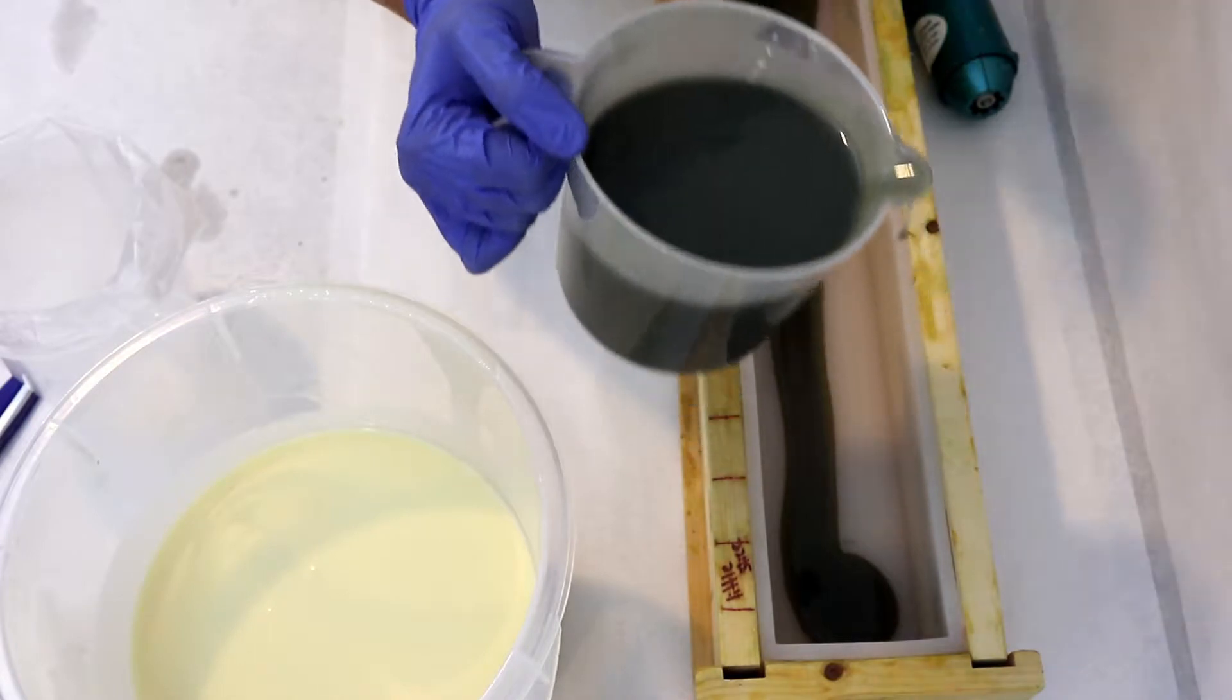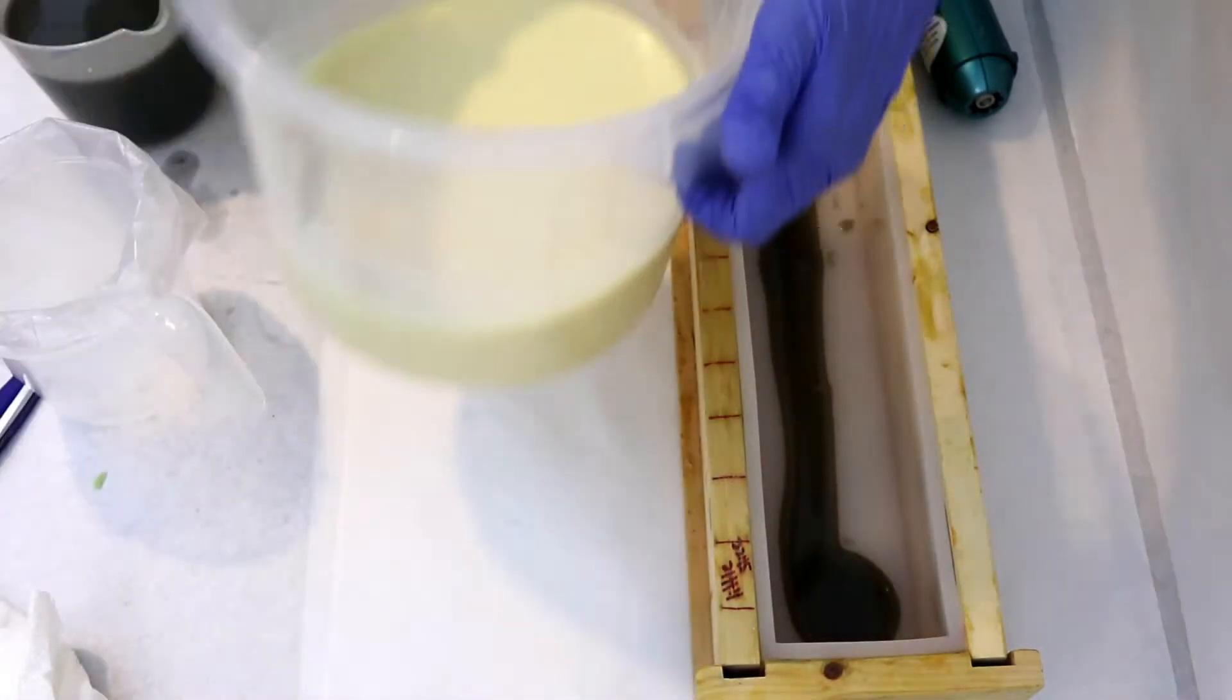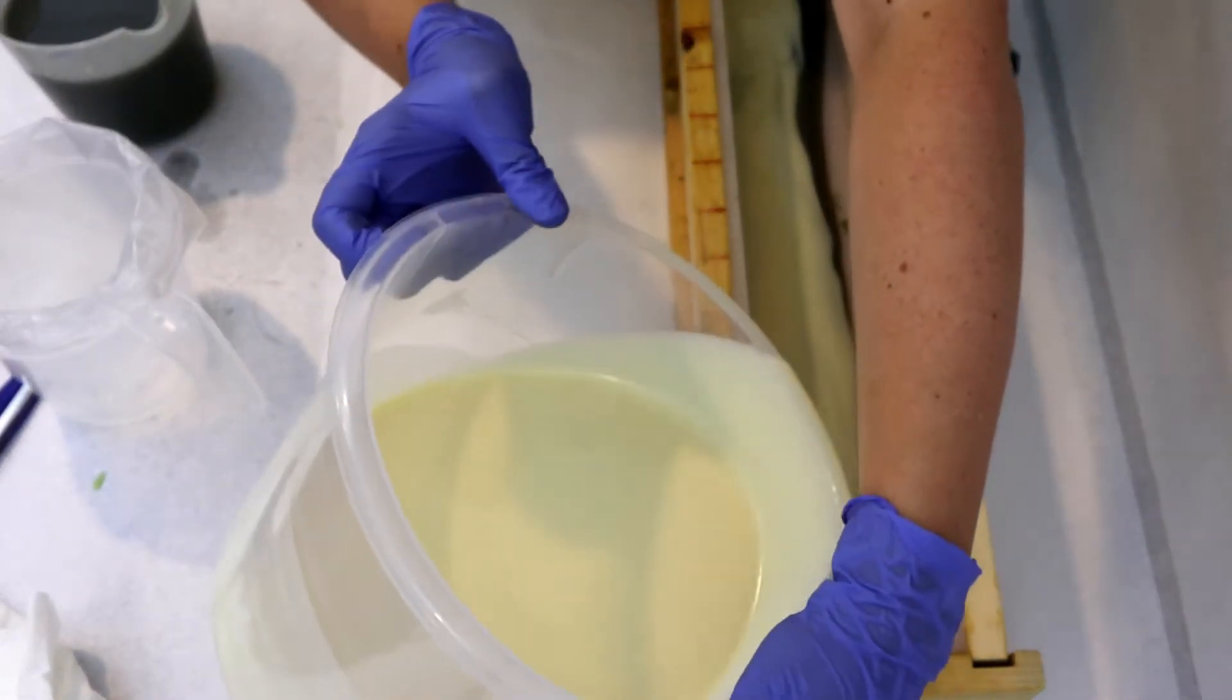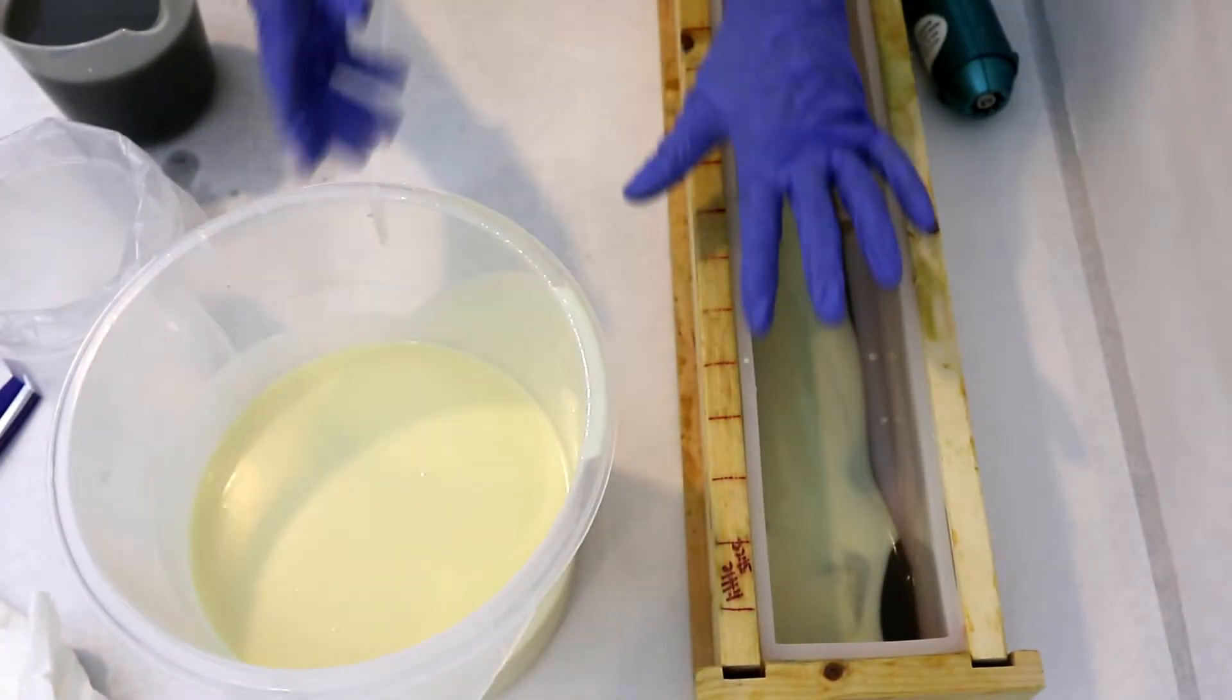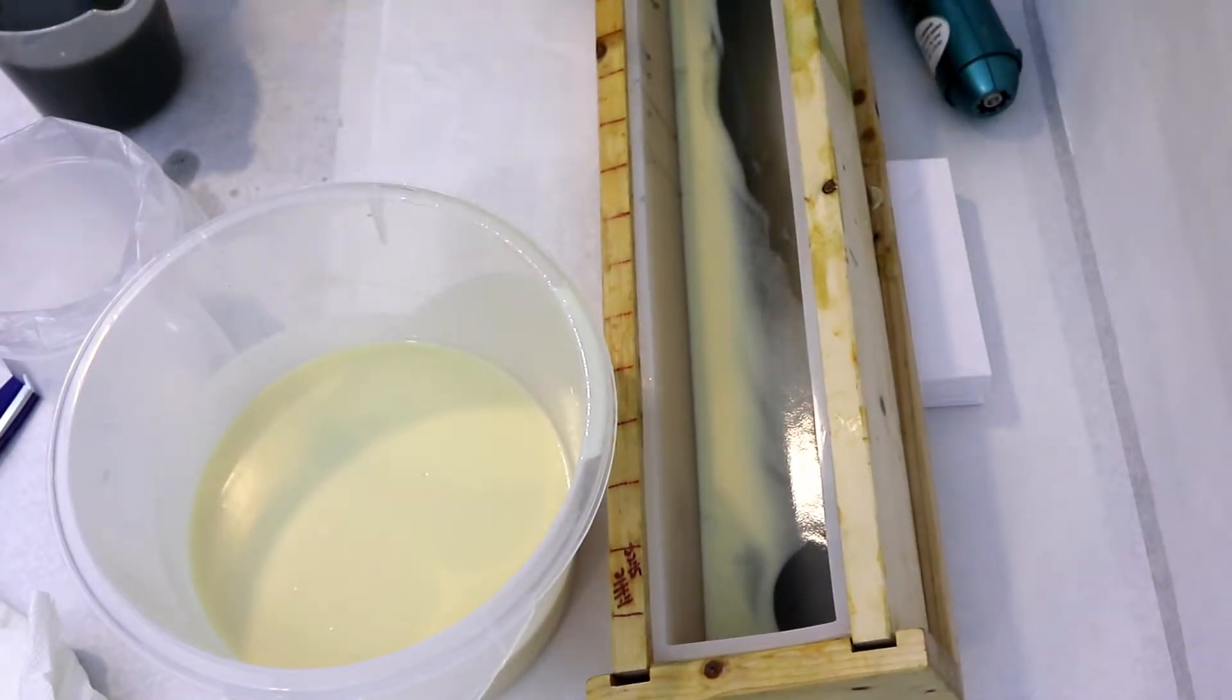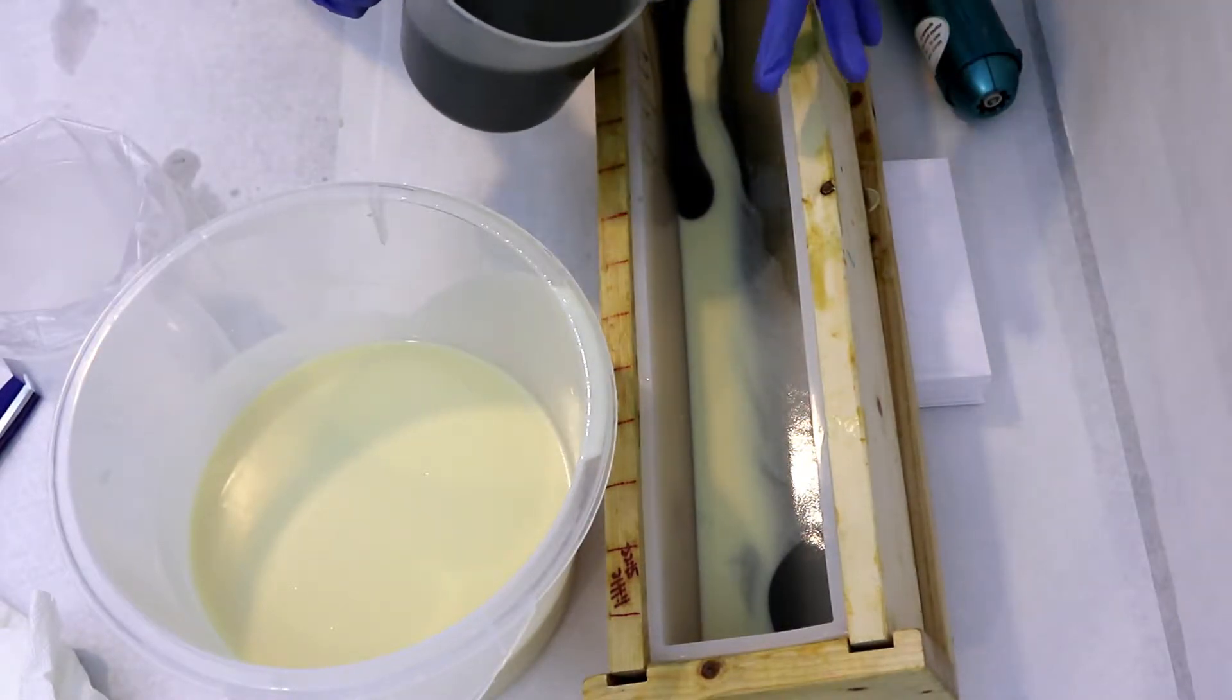So the first one is an activated charcoal. We're pouring that in. And next a little bit of white soap batter. So if you didn't know, the loon is the Minnesota state bird. And so this design is supposed to kind of look like the loon, the plumage black and white. It's just a representation. It's not an exact.